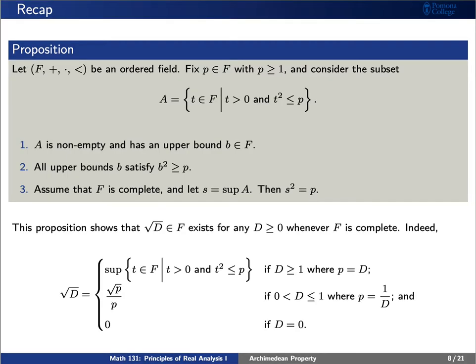For example, the square root is defined as the supremum of the set above whenever d is greater than or equal to 1, where we set p equal to d. If d is between 0 and 1, we set p equal to 1 over d, and think of the square root as what we find if we rationalize the denominator. Hence, we define the square root of d as the square root of p divided by p. Finally, if d is equal to 0, we define its square root as just the number 0.